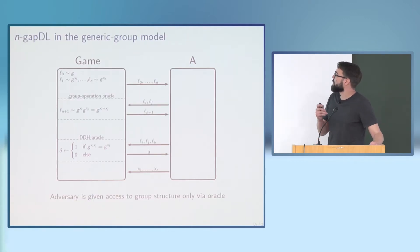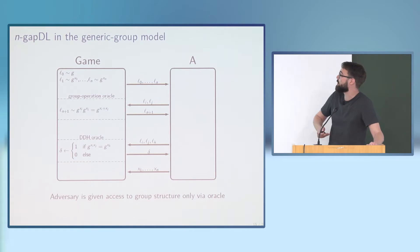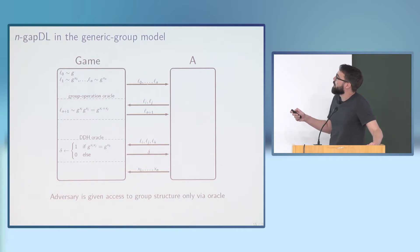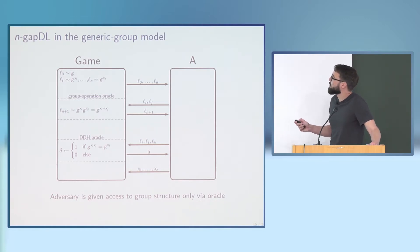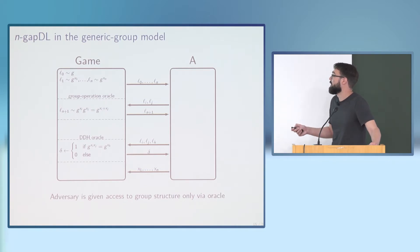We consider this in the generic group model, restricting to algorithms that only rely on group structure without exploiting the concrete instantiation. This is modeled by not giving the adversary direct access to the group—instead it only gets opaque handles. It accesses the group operation only via an oracle: to compute the product of g_i and g_j it queries for the corresponding labels and receives the label of the product. The decisional Diffie-Hellman oracle is also defined with respect to those labels.